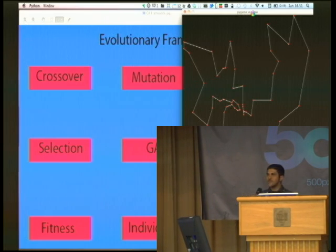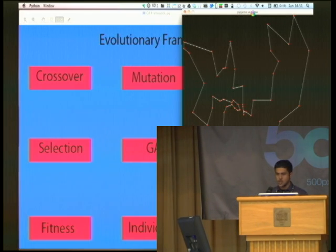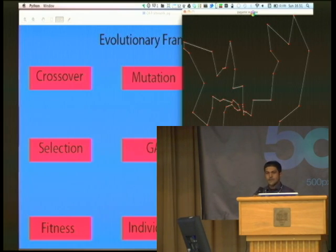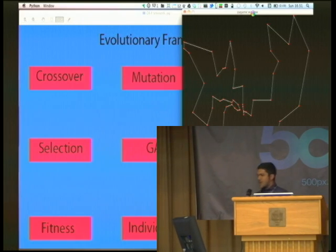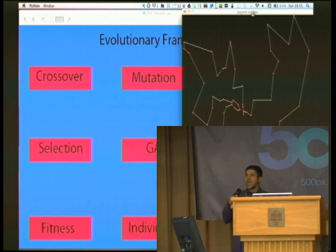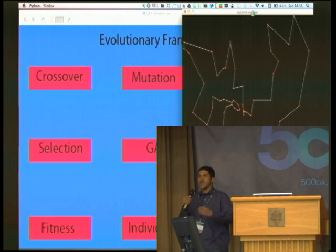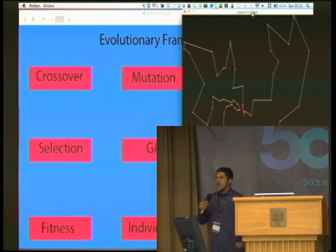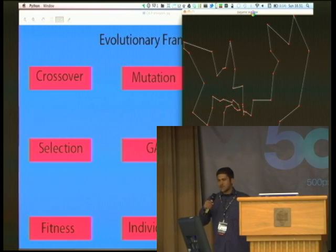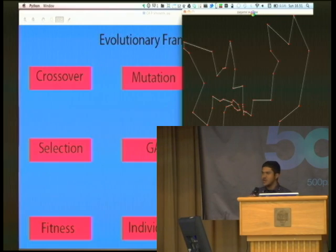In doing all of this, we make sure that there's still a permutation on the 52 cities, just to be sure, because otherwise it's an illegal solution. We do that several times, and once we have enough children, we call that the next generation of that population. We do this for several generations, and ultimately we converge on an optimal solution.